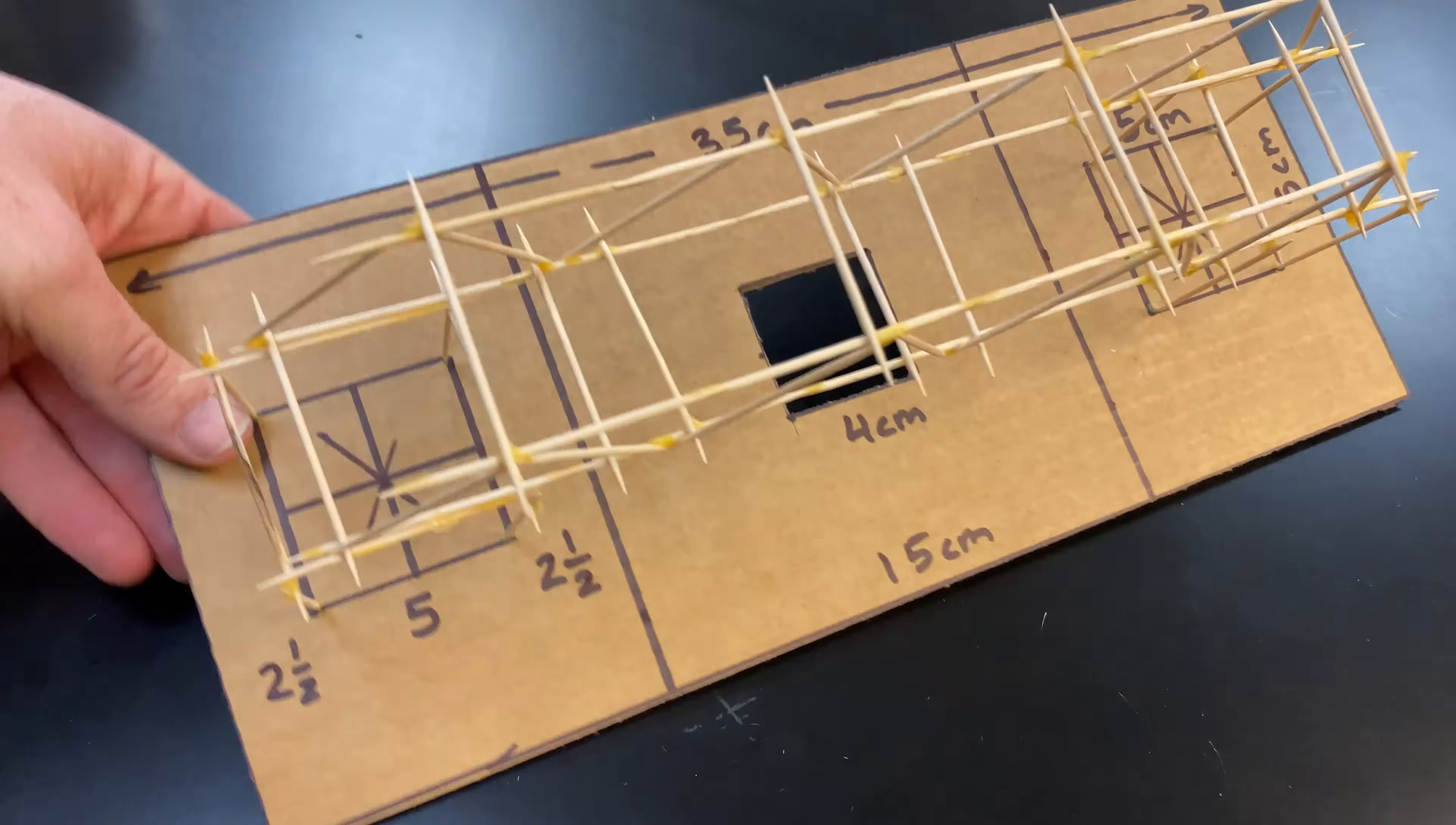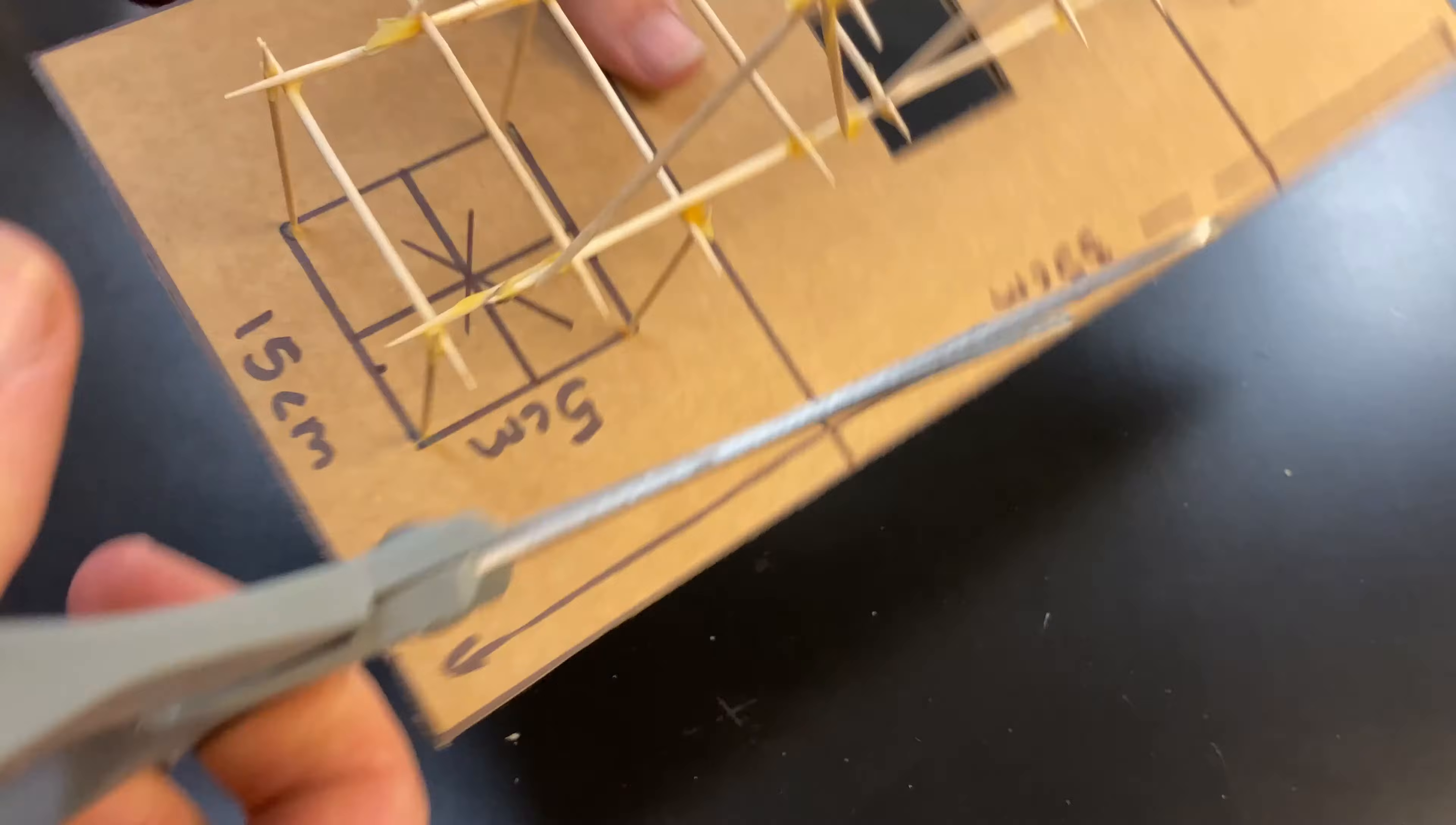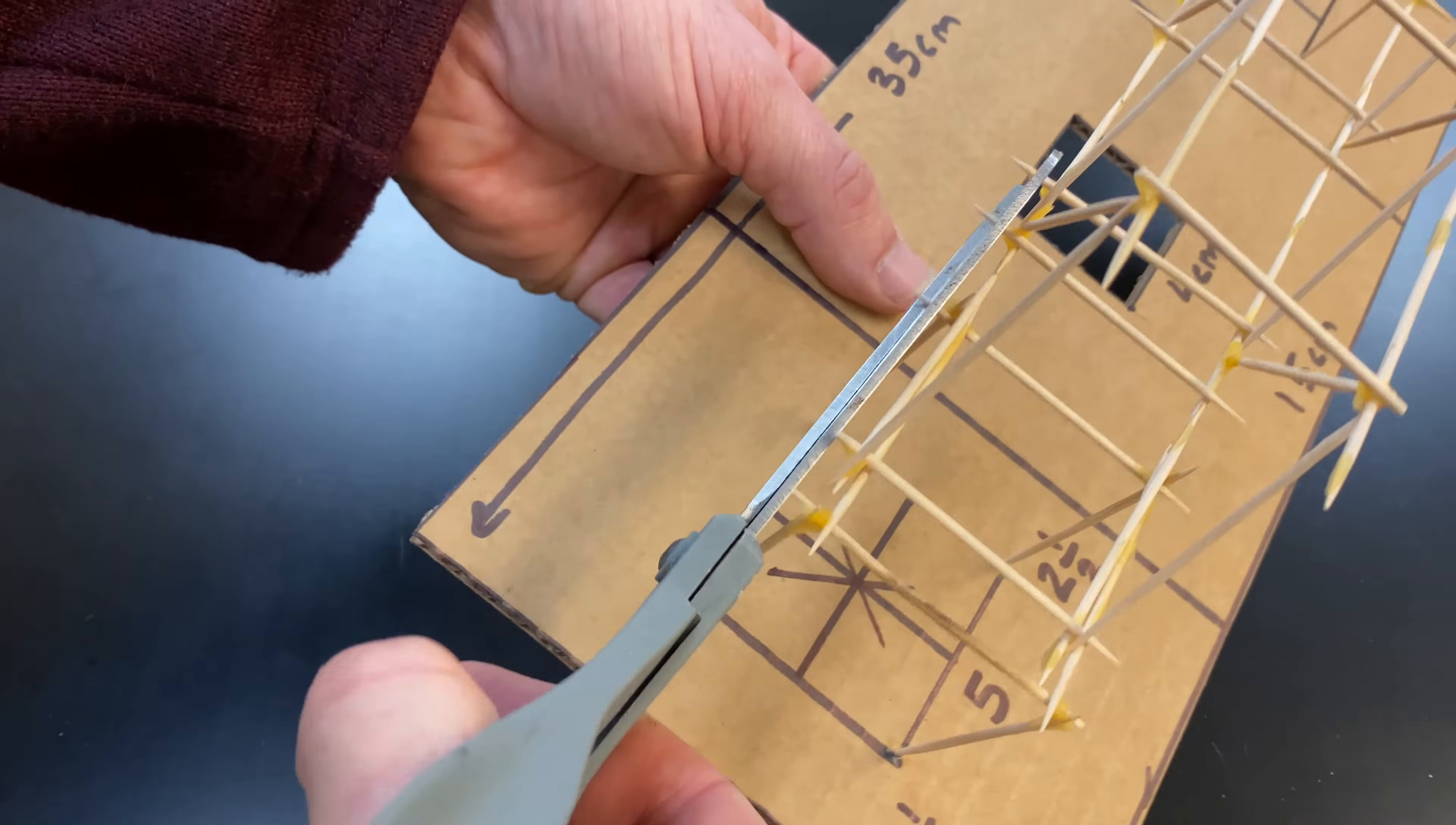Once everything is glued together, you could use some scissors and trim the tips of the toothpicks to make your bridge look better. Just be aware that when you do this, some toothpicks might come unglued.